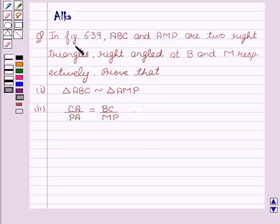Our given question is, in figure 6.39 ABC and AMP are two right triangles, right angled at B and M respectively. Prove that triangle ABC is similar to triangle AMP and CA upon PA equal to BC upon MP.